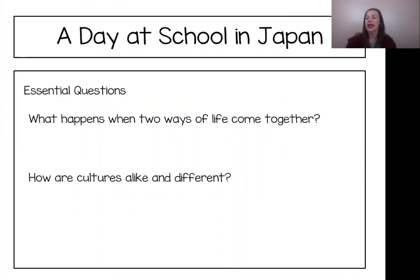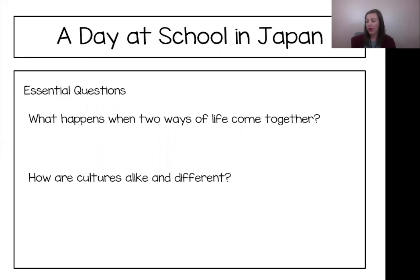We always start our lessons with our essential questions to pull our learning together. What happens when two ways of life come together? And how are cultures alike and different? I know that last week you talked about clothing around the world with Mrs. Buchanan. Clothing is an important part of cultures, and we can see influences from many cultures in our clothing today. We will also be reading about how food is different around the world next week. And today we will be reading and looking for ways our culture is similar and different from the Japanese culture. So let's follow our sleuth tips and look for answers in the text.